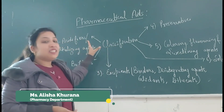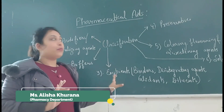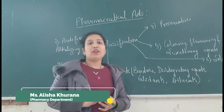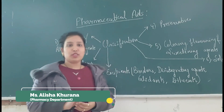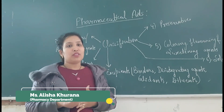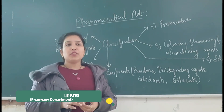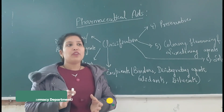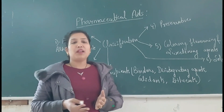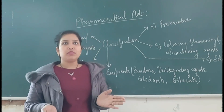Pharmaceutical aids are agents which have little or no therapeutic value, but are used in the preparation of pharmaceutical dosage forms. Such agents are called pharmaceutical aids. They are obtained from various sources like plant sources, mineral sources, and animal sources.